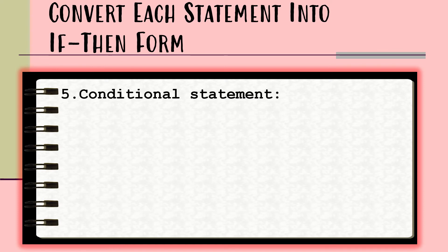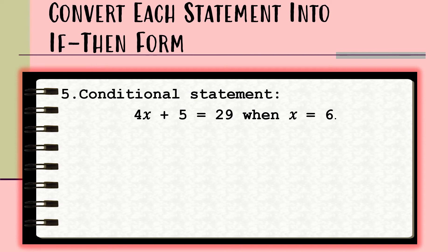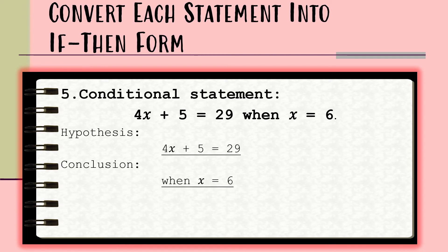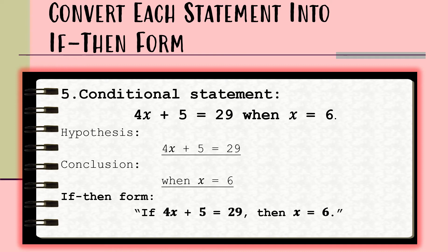For statement number five, we have the mathematical statement: '4x + 5 = 29, when x is equal to 6.' The hypothesis is '4x + 5 = 29,' while the conclusion is 'x is equal to 6.' Combining these two using the words 'if' and 'then,' we have: 'If 4x + 5 = 29, then x is equal to 6.'